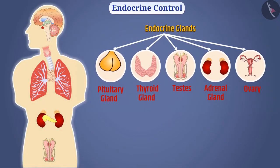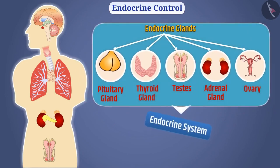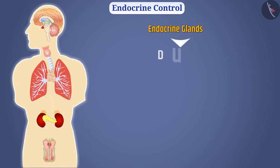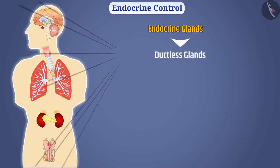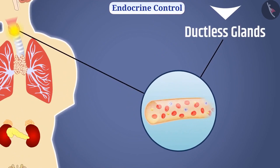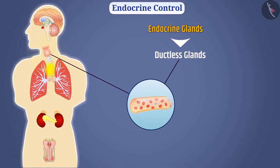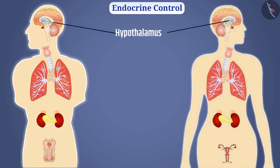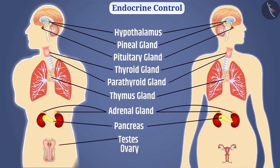All endocrine glands of a body are part of the endocrine system. The endocrine glands do not have ducts, so they are called ductless glands. Hormones produced by them are secreted directly into the blood, through which they reach all cells of the body. Therefore the location of hormone synthesis and the place of action in the body are different.